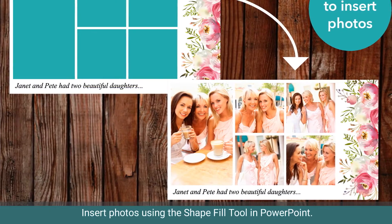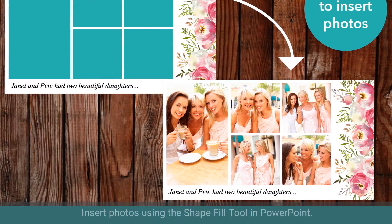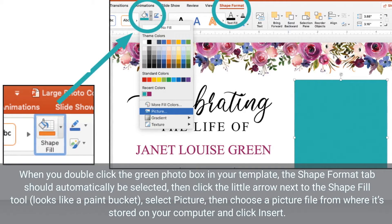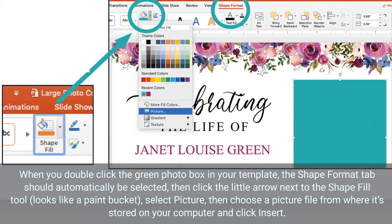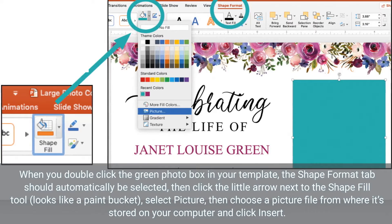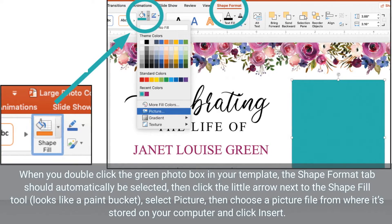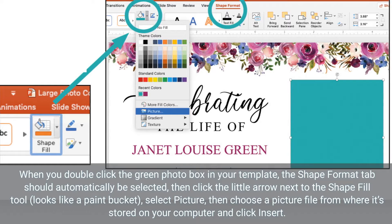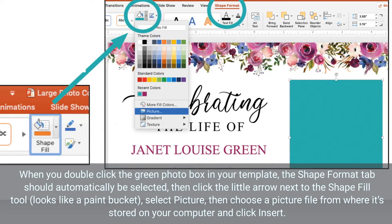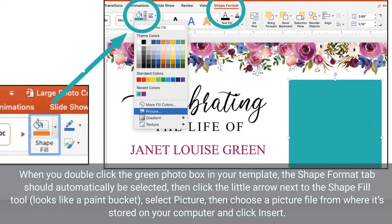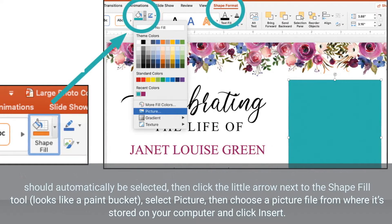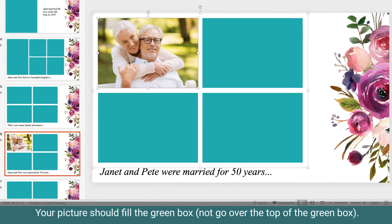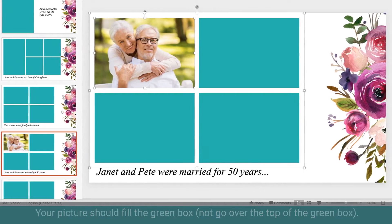Insert photos using the shape fill tool in PowerPoint. When you double-click the green photo box in your template, the shape format tab should automatically be selected. Then click the little arrow next to the shape fill tool — it looks like a paint bucket — select picture, then choose a picture file from where it's stored on your computer and click insert. Your picture should fill the green box, not go over the top of it.